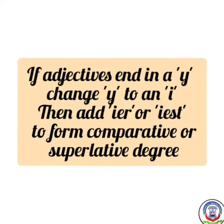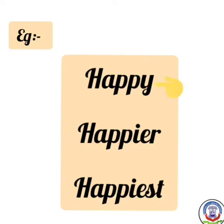If adjectives end in -y, change the y to i, then add -ier or -iest to form the comparative or superlative degree. Y ko hataake -ier ya -iest add karna hai. Example: happy (H-A-P-P-Y) → comparative: happier (H-A-P-P-I-E-R) → superlative: happiest (H-A-P-P-I-E-S-T). Happy, happier, happiest.